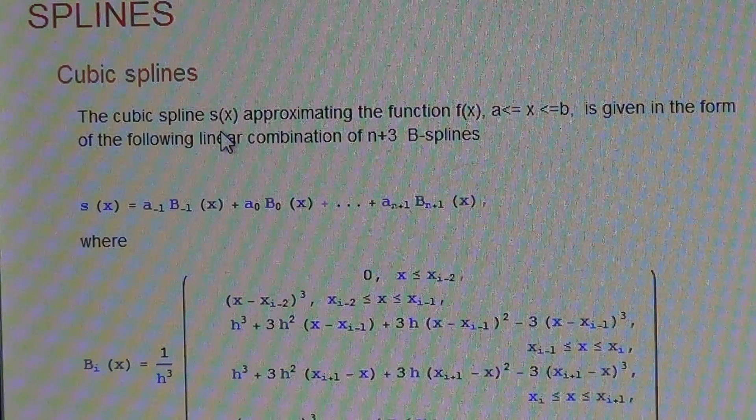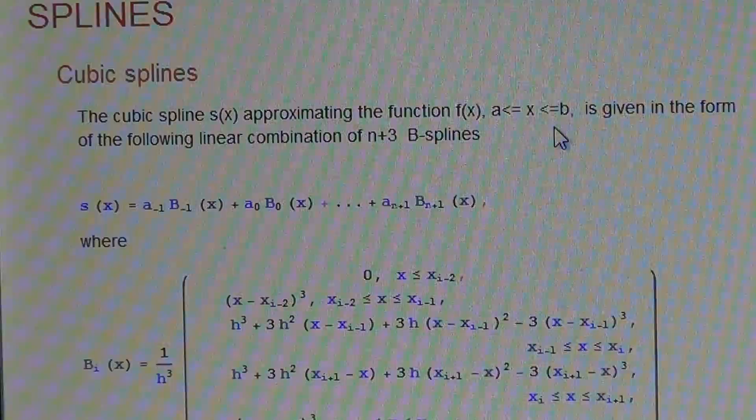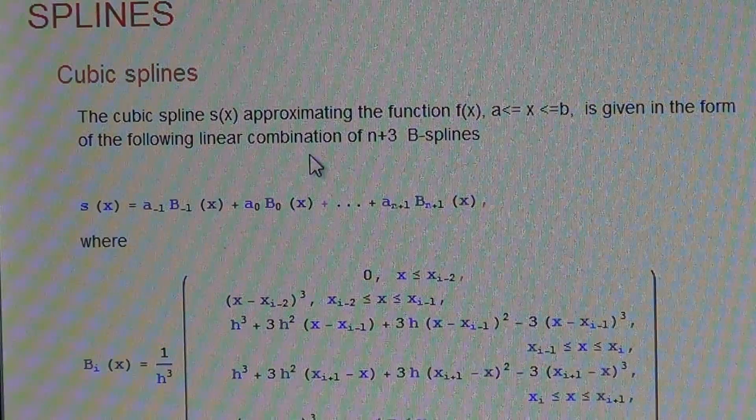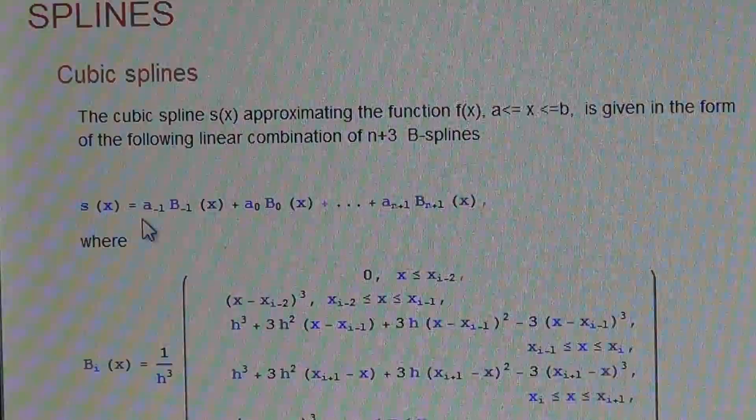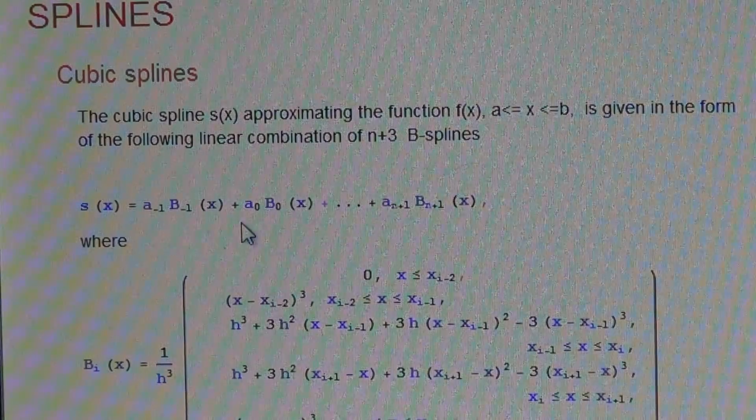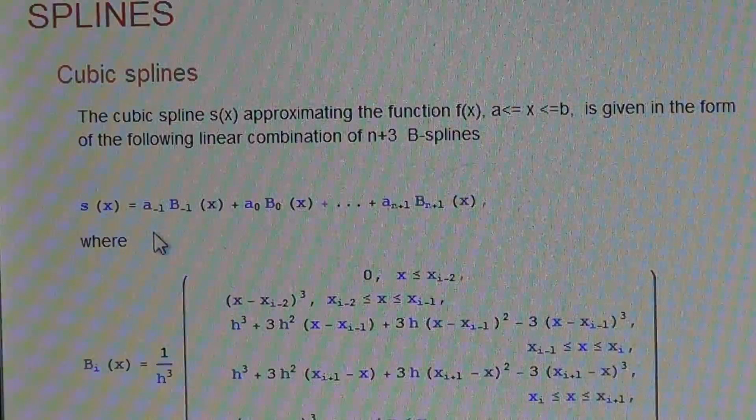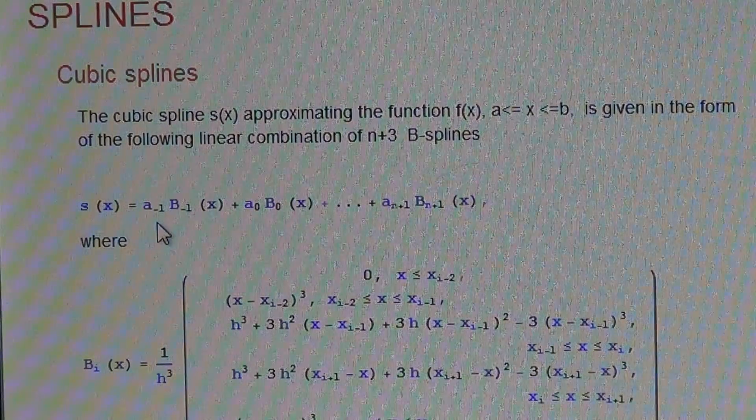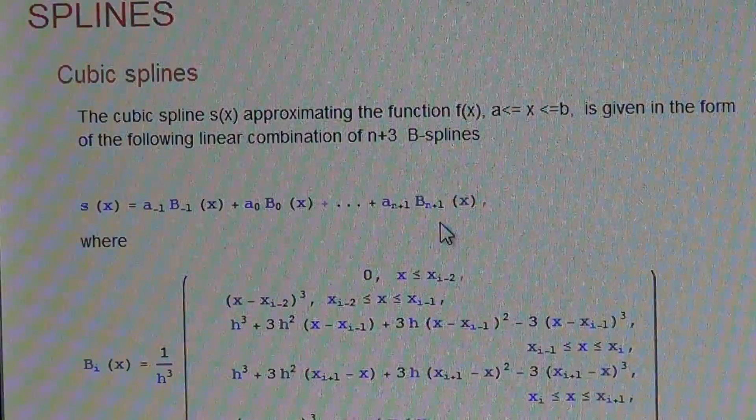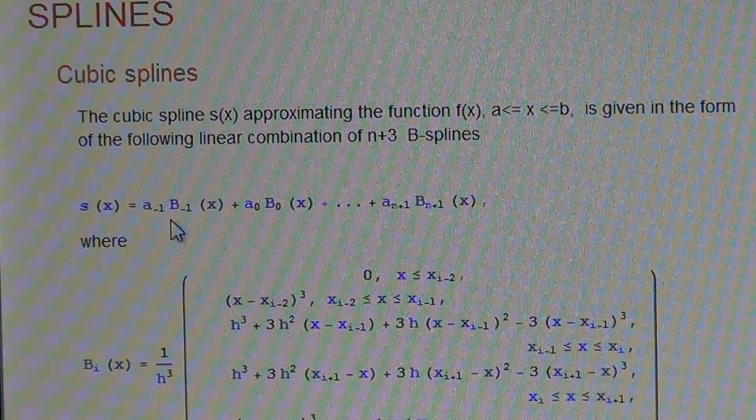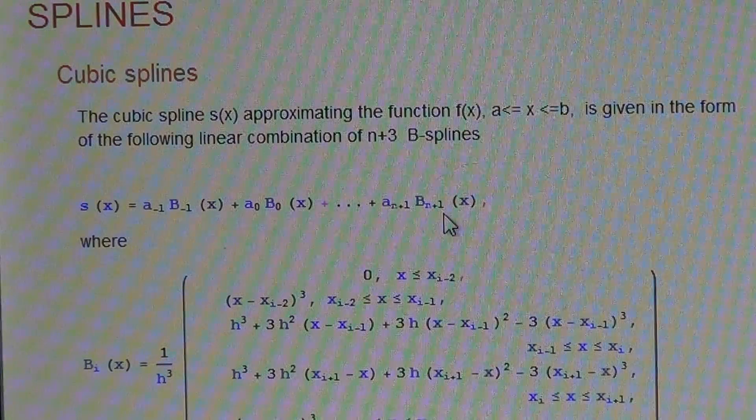The cubic spline s(x) approximating the function f(x) given in the interval [a,b] is in the following form of linear combination of n+3 B-splines: s(x) equals a_{-1}B_{-1}(x) + a_0 B_0(x) + ... + a_{n+1} B_{n+1}(x). We start with minus 1 subscript up to n+1, having n+3 coefficients and the linear combination of n+3 Ritz-Galerkin coordinates in the form of B-splines.